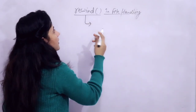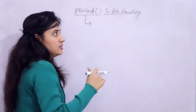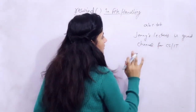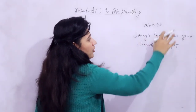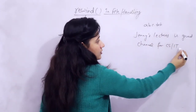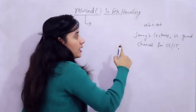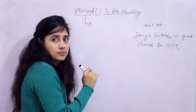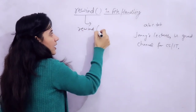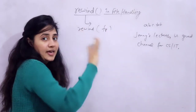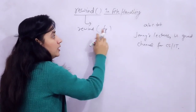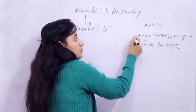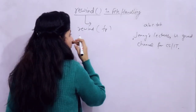Rewind, as the name suggests, moves the file pointer back to the beginning. Suppose I have a file abc.txt containing 'Jenny's lectures is a great channel for CS and IT.' At some point the file pointer may be in the middle or at the end, but if you want to set it back to the beginning, you use the rewind function. The syntax is just rewind(fp) — it takes one argument, the file pointer, and the return type is void.